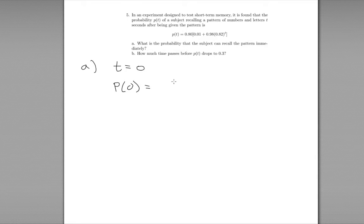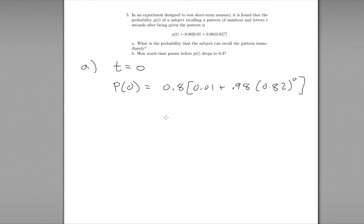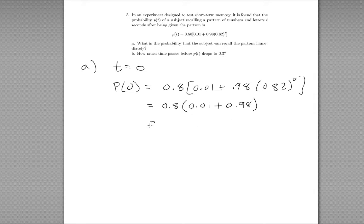So the probability at time 0 is 0.8 times (0.01 plus 0.98 times 0.82 to the power of 0), because t equals 0. Anything to the power of 0 is 1, so this becomes 0.8 times (0.01 plus 0.98), which gives us 0.8 times 0.99. So the probability of recall immediately after is 0.8 times 0.99 — you can leave it like that.